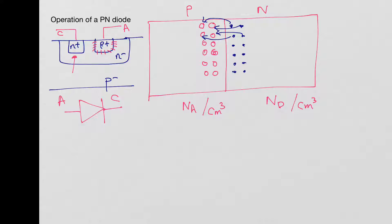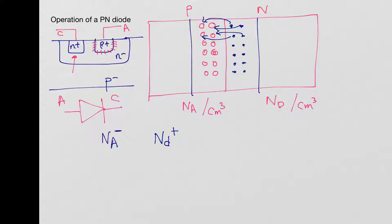On the P side, in the area where this happens, you had acceptor impurities — boron atoms — NA. Each boron atom becomes a negatively charged ion, NA minus, because it gains an extra electron. On the N side, each phosphorus atom loses its extra electron and becomes a positively charged ion, ND plus. Now does this process continue until the whole P and N regions are consumed? No, it stops at a certain place.